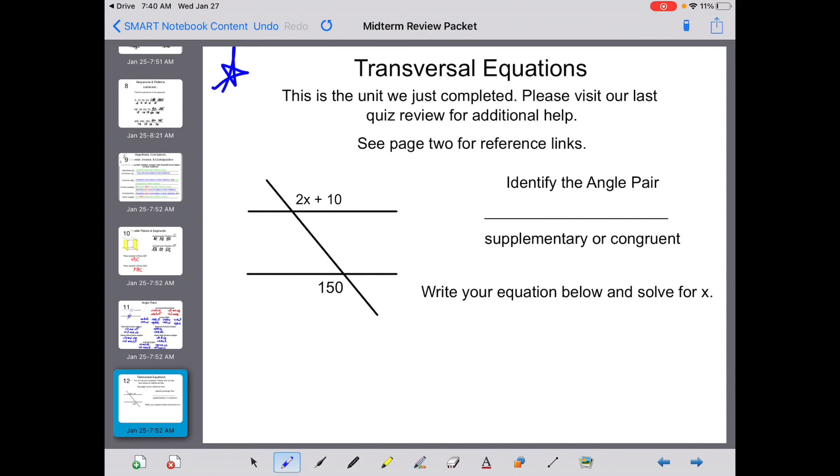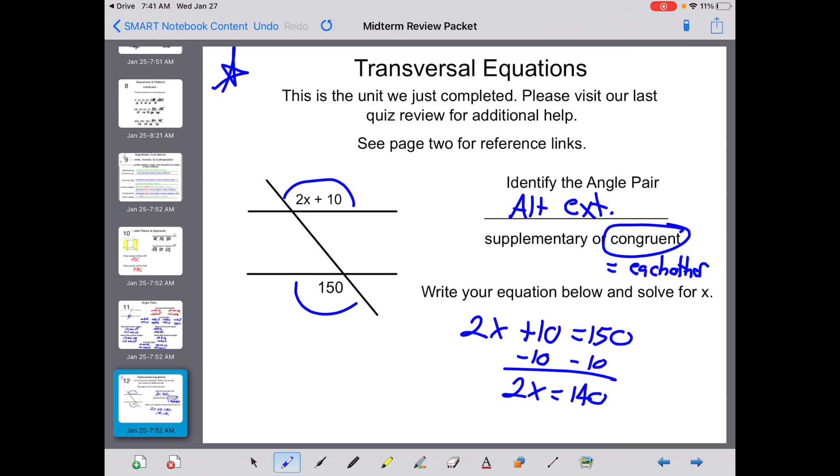The last part, again, it's going to be a short response. You have your transversal equations. Identify the angle pair. Well, these angles are alternate exterior. Alternate exterior angles are congruent, which means they equal each other. This was our last quiz. So 2x plus 10 equals 150. Minus 10 on both sides. 2x equals 140. Divide by 2 on both sides. And x equals 70. It's going to be the last question on your quiz.